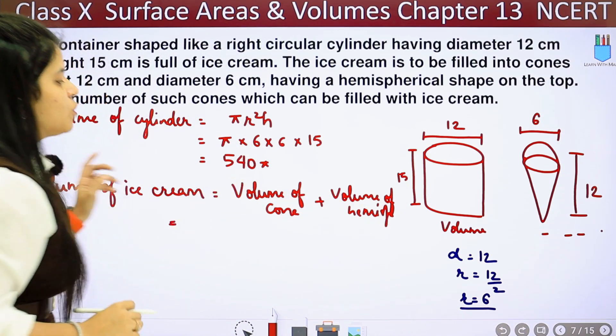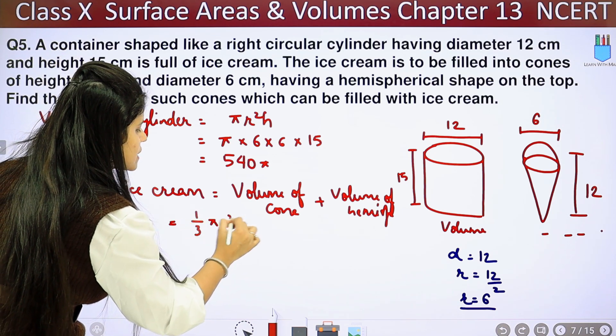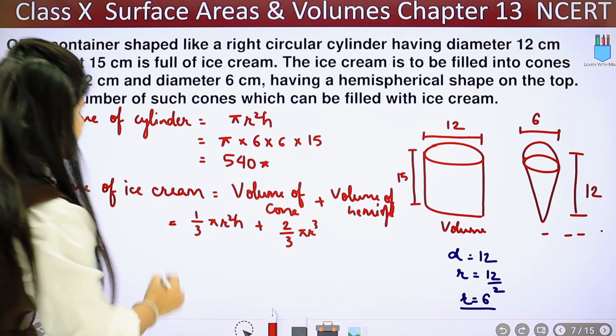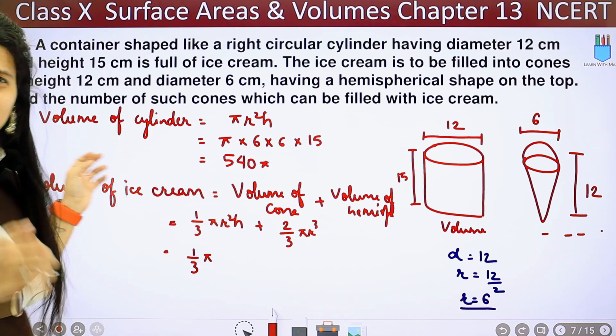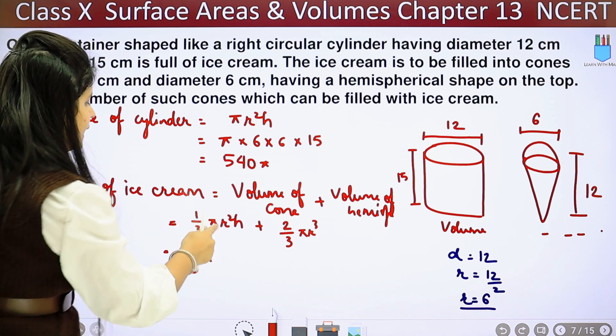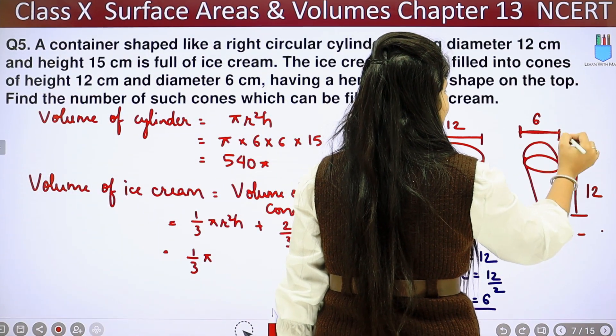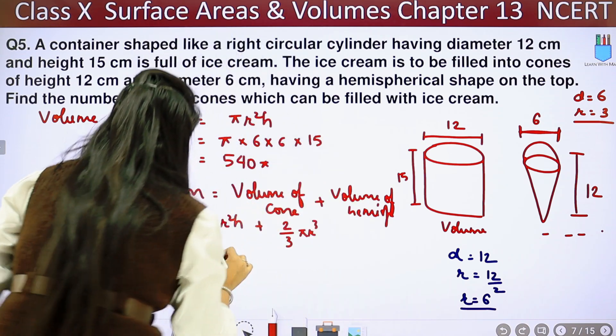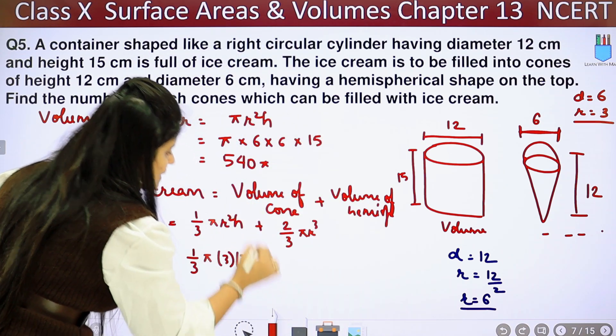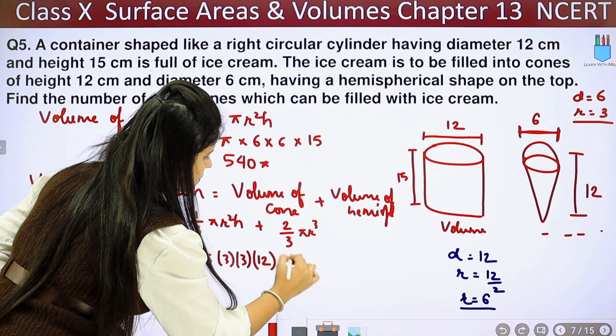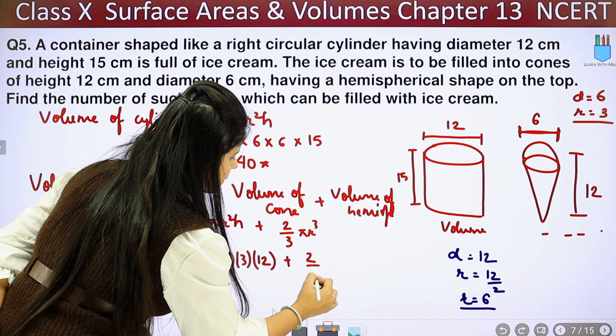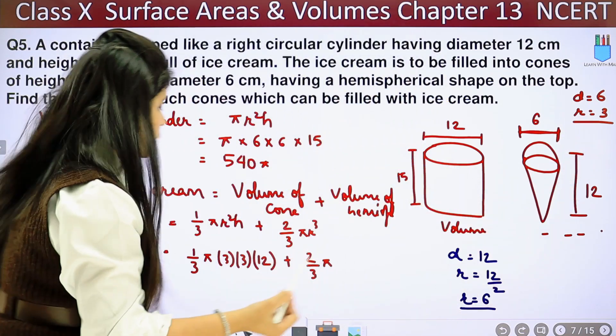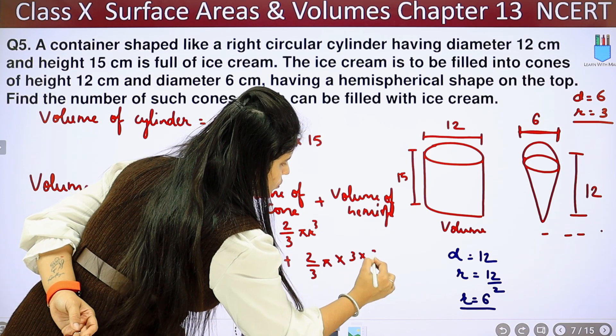So volume of one cone plus volume of hemisphere: 1/3 π r² h plus volume of hemisphere is 2/3 π r³. Let's put values. We have 1/3 π again as it is. For volume of cone, the diameter is 6, which means radius will be 6 upon 2, that is 3. So this is 3 × 3 and h is 12.